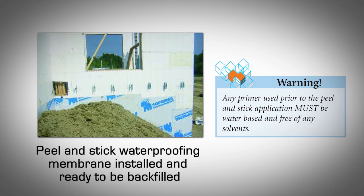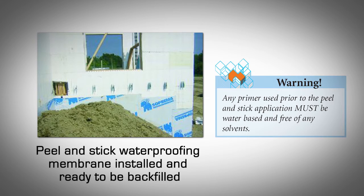Dimple sheet damp proofing and waterproofing systems. Dimple sheet membranes are wrapped around the foundation walls with the dimple side facing the EPS on the AMBIC ICF, creating an air gap between the backfill soil and the walls. This air gap prevents the buildup of direct hydrostatic pressure over the walls, so moisture in the soil cannot penetrate through to the inside of the basement. When installed properly, dimple sheet membranes have been used with success throughout North America.